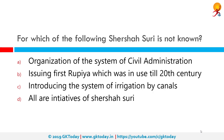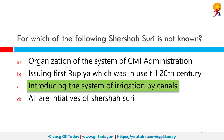For which of the following is Sher Shah not known? The correct answer is introducing the system of irrigation by canals. He is known for organizing the system of civil administration and issuing the first Rupiya, which was used till the 20th century. Sher Shah, by dint of his military skills, daring acts, great courage, and resourcefulness, not only established a mighty empire but also made necessary arrangements for smooth and efficient administration and controlling the vast empire.